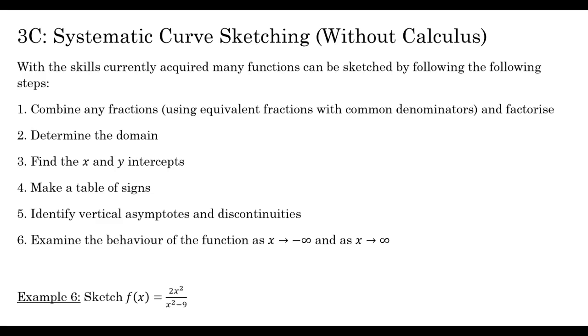So I've got a bit of a checklist here. It's not really exhaustive. I haven't done things like check for oddness or evenness, which can speed up the process a little. But let's have a look at these things. First of all, combine any fractions that you've got there in the function. Factorising, combining the fractions makes it a lot easier to do the next parts of this.